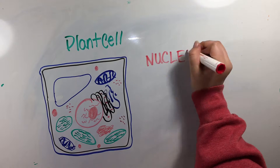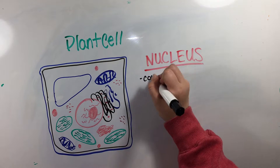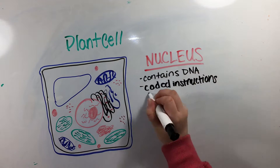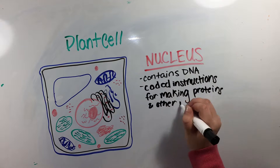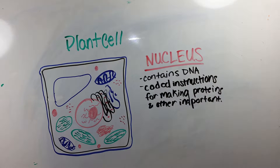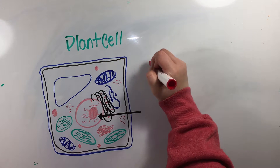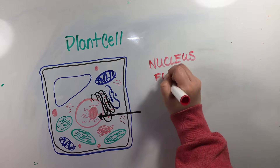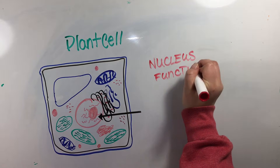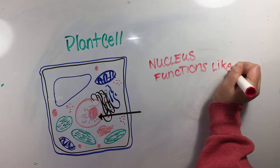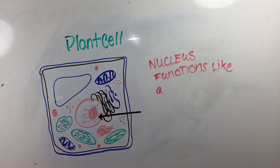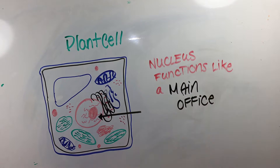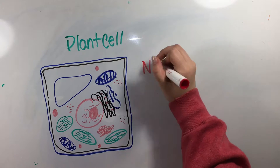The nucleus contains all DNA and has coded instructions for making proteins and other important materials. The main office of a zoo is like the nucleus of a cell because it helps direct all operations concerning the zoo, including how it works and what happens within it, and important information can be obtained here.